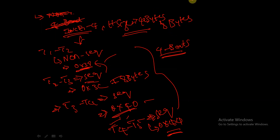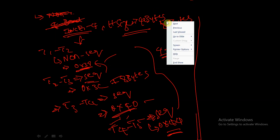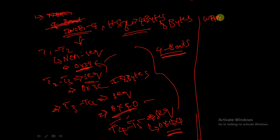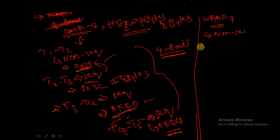In case of WRAP4, the initial address is the same. The first transfer will be non-sequential, the initial address is 0x38, and the size of the data is 4 bytes.